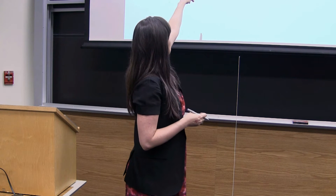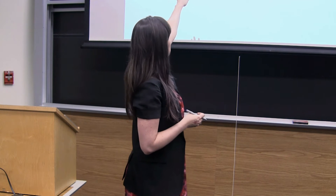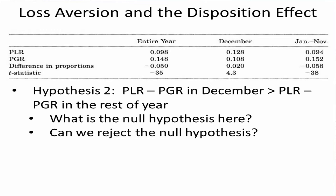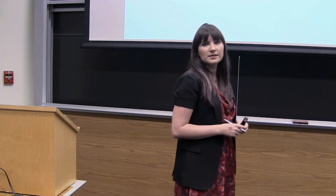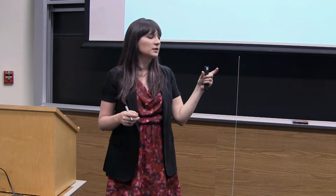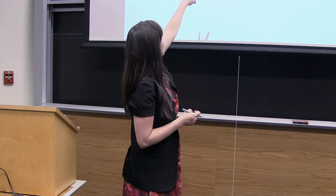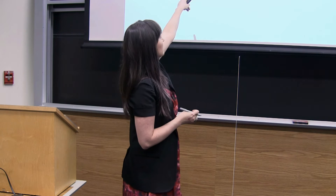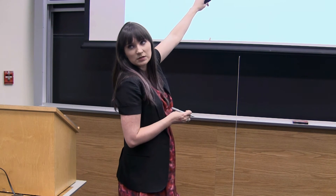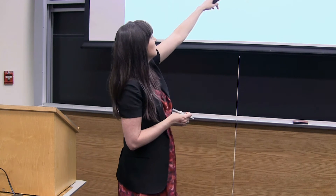The strength of the disposition effect is essentially the difference between PGR and PLR. This hypothesis is implicitly saying the disposition effect is less strong in December than in the rest of the year. The paper defines this hypothesis in a somewhat backwards way — intuitively, the thing that gives you a positive number when the disposition effect exists is PGR minus PLR, not the other way around. But the paper looks at PLR minus PGR, which gives one negative and one positive number in a way that's slightly counterintuitive. Just be careful when thinking about that.